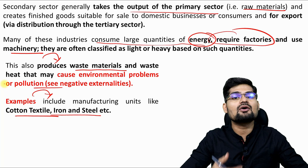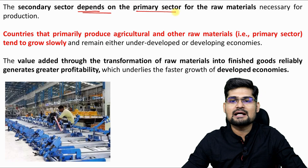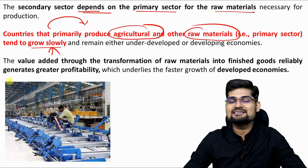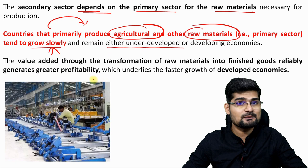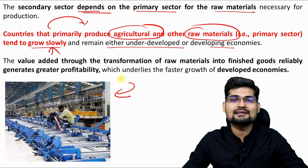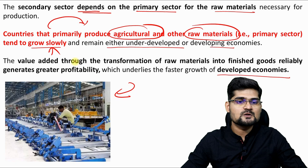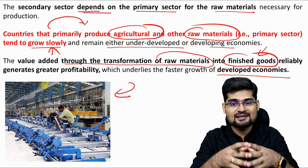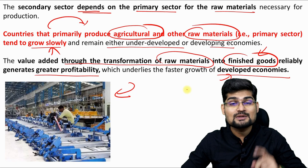The secondary sector is dependent on the primary sector for raw materials. Countries that primarily produce agricultural and other raw materials — the primary sector — tend to grow very slowly and remain underdeveloped, what we also know as developing economies. But countries which produce finished goods out of these raw materials, through the dominance of the secondary or manufacturing sector, become developed very fast. Value added through transformation of raw materials into finished goods leads to greater profits and faster economic growth.